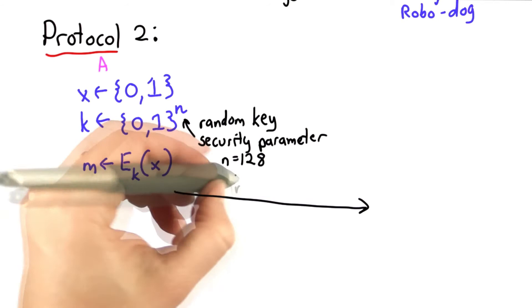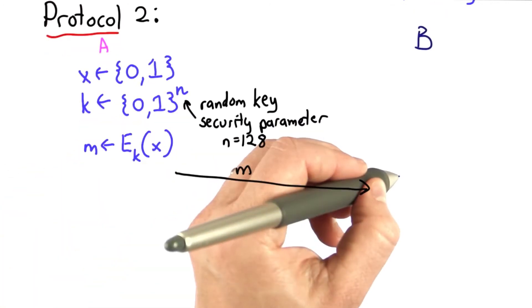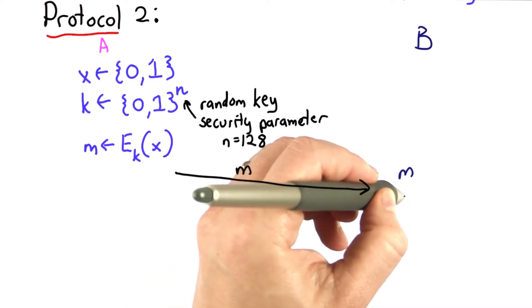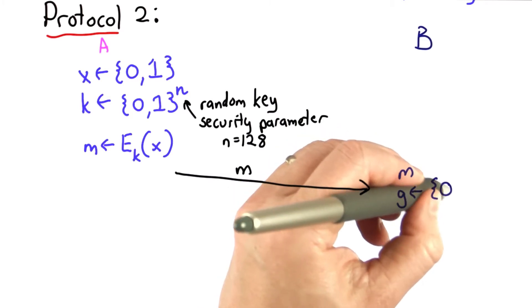She will send to Bob the value of m. Bob receives the value of m, keeps track of it, and picks a guess. Bob will generate, however he wants, a guess value that's either 0 or 1.